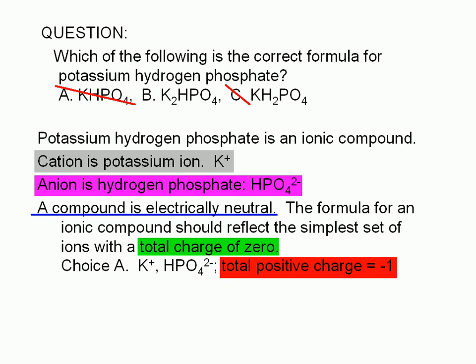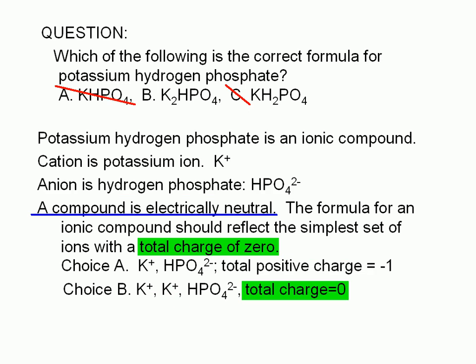So how about choice B? The formula implies that there are two cations and one anion in one formula unit of this compound. Positive 1 plus another positive 1 plus a negative 2 equals 0. And therefore, choice B is the correct formula for potassium hydrogen phosphate.